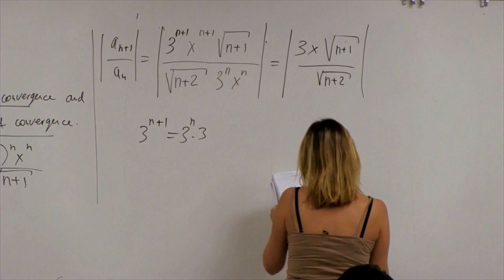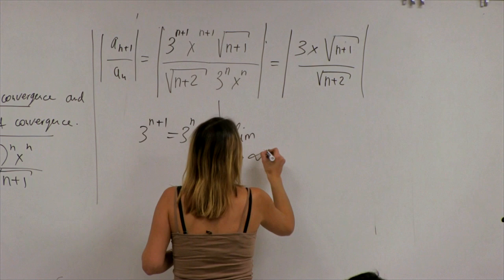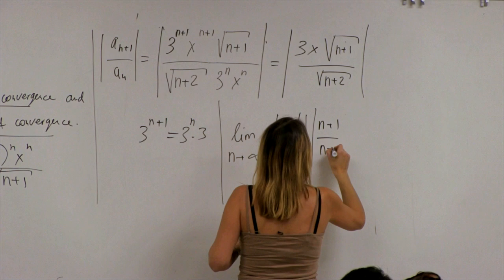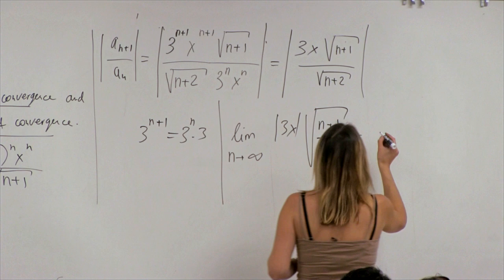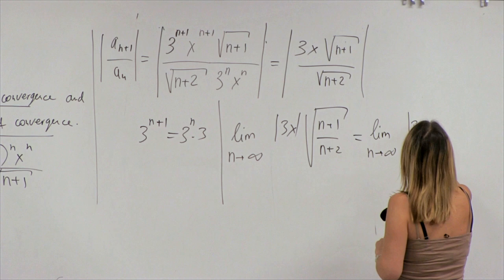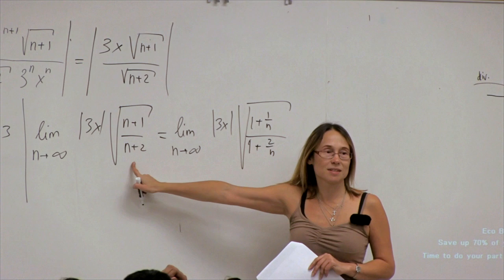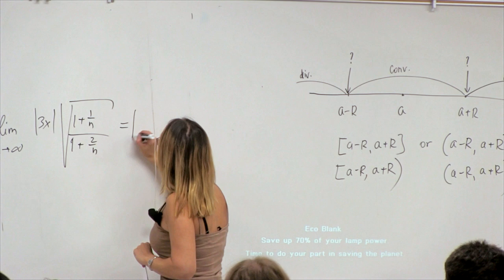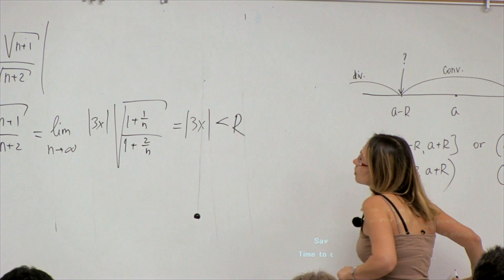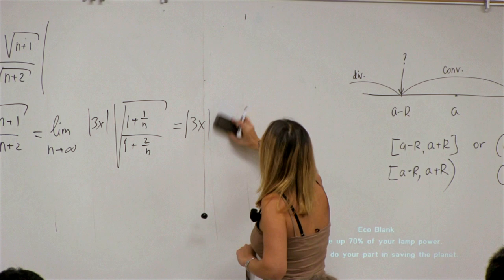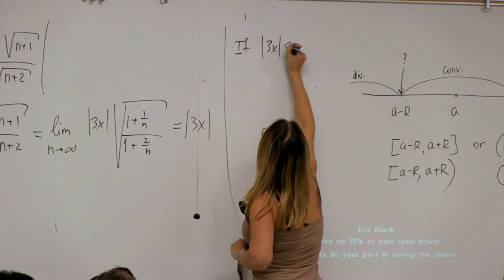So I have 3|x| times √(n+1)/√(n+2). What is the limit of this as n goes to infinity? The square root ratio goes to 1, so the limit is simply 3|x|. If 3|x| is less than 1, then the series converges.